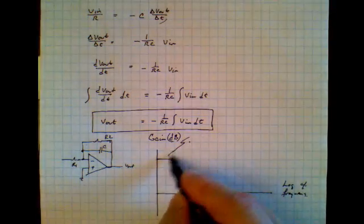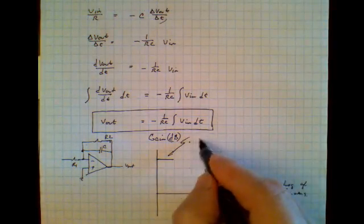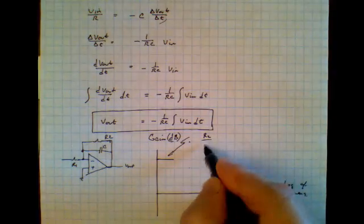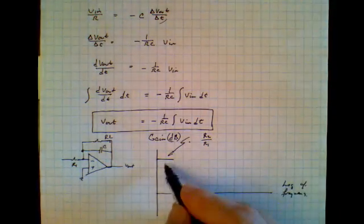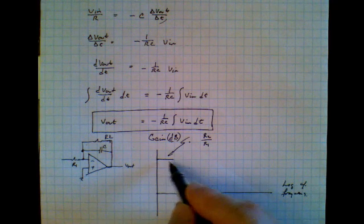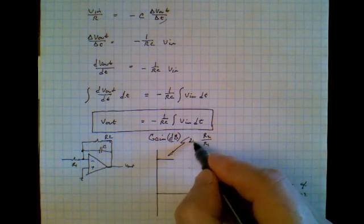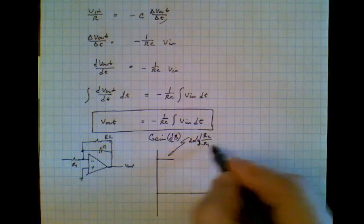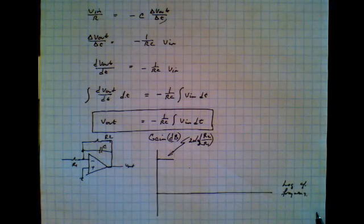So, this gain over here is going to be R2 over R1. That would be how big this gain is. But in decibel terms, it'll actually be 20 times the log of R2 divided by R1.